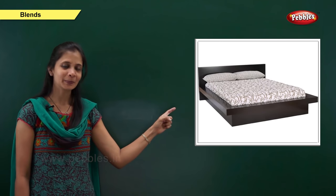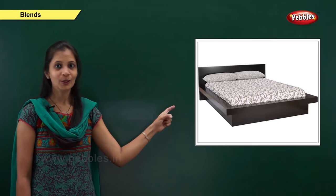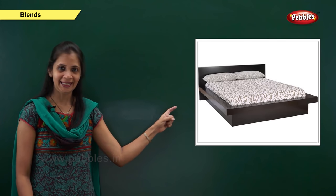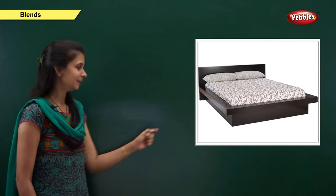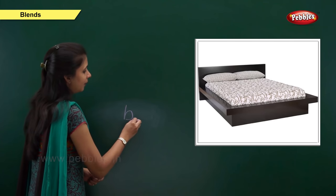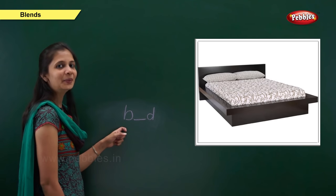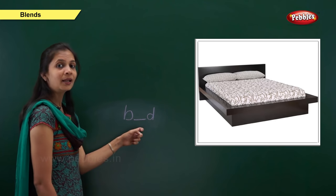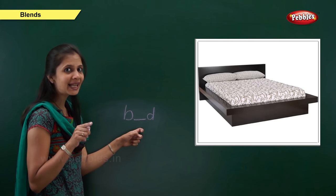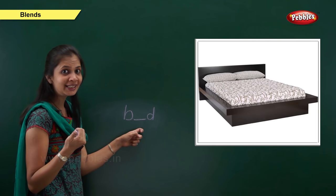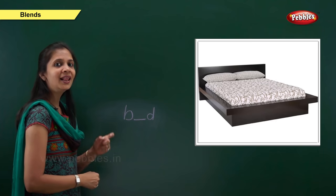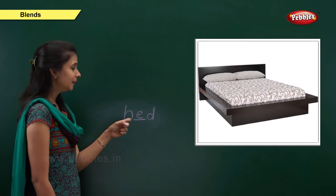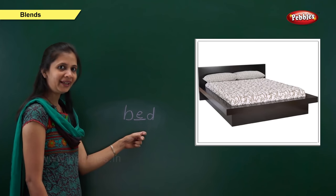Next one. Which picture is this? It is bed. What is the sound of this word? It is b, a, d. When the beginning sound is 'b', the letter is b. When the ending sound is 'd', the letter is d. When the middle sound is 'a', what is the letter? It is vowel e. Very good. So: b, a, d — bed. B, e, d — bed.